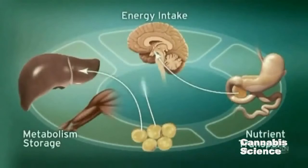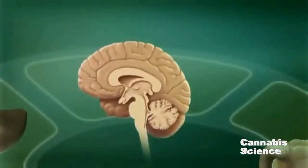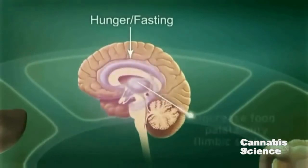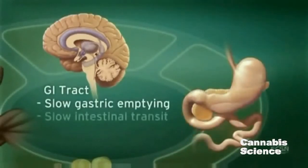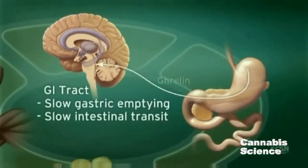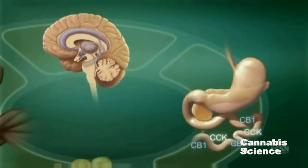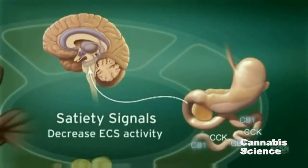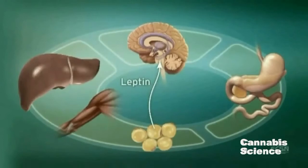Endocannabinoid system activity in the central nervous system regulates food intake. ECS stimulation by hunger and fasting signals stimulates appetite and increases the palatability of food. Endocannabinoids slow gastric emptying and GI transit and appear to stimulate secretion of ghrelin, a neuropeptide that increases appetite and food intake. After eating, cholecystokinin in the duodenum triggers satiety signals, and ECS activity is decreased through suppression of CB1 expression. An increase in the adiposity hormone leptin decreases endocannabinoid levels in the hypothalamus and decreases food intake.